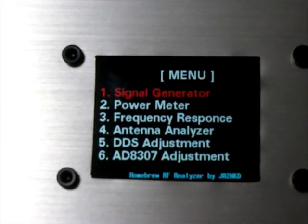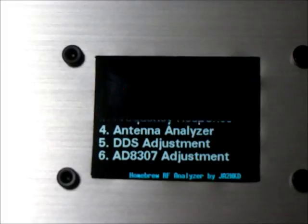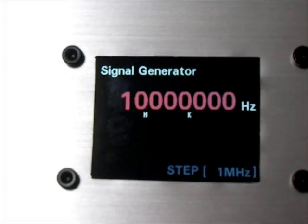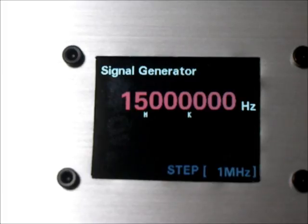RF analyzer has four functions and two adjustment tools. Number one: signal generator. Push enter switch. Frequency is 10 MHz. Frequency changed by rotary encoder. Now step is 1 MHz: 11, 12, 13, 14, 15. Step change is push left switch, right switch.